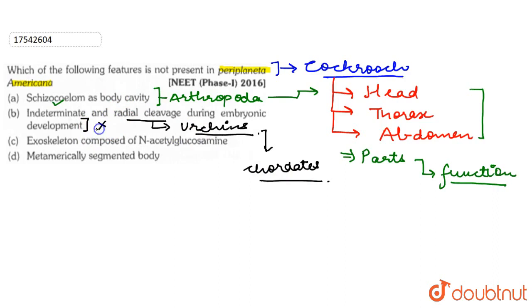If we talk about the third one, the exoskeleton is composed of N-acetylglucosamine. The cockroach region of the body is formed in three types of body form and different parts are formed. The exoskeleton is formed and it consists of its framing.